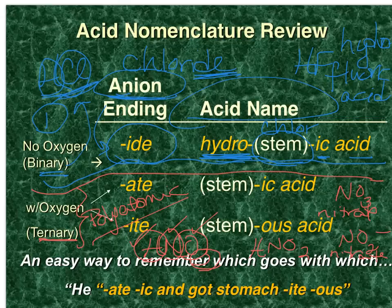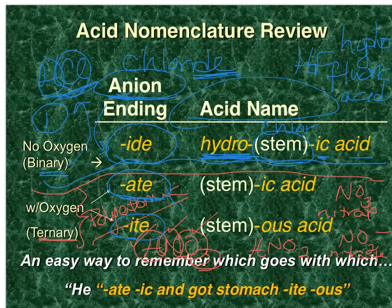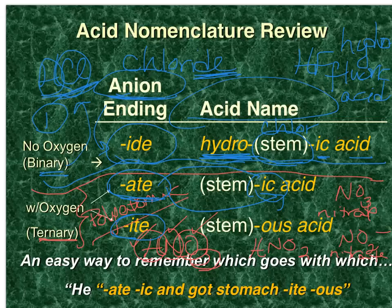Some of these polyatomic anions have a name that ends in '-ate', and some end in '-ite'. If the anion that makes up the acid ends in '-ate', the name of the acid will end in '-ic'. If the name of the polyatomic anion ends in '-ite', the name of the acid ends in '-ous'.